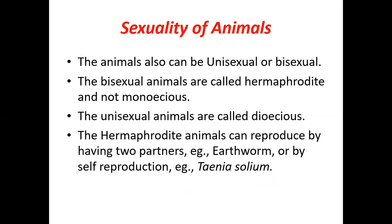Animals can be unisexual or bisexual, similar to unisexual and bisexual flowers. Bisexual animals are called hermaphrodite animals. Hermaphrodite animals, like the earthworm, can reproduce by having two partners, or by self-reproduction, like Taenia solium (tapeworm).